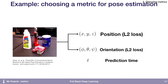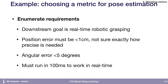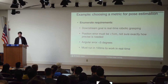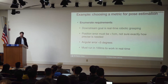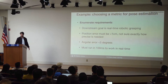To come back to our running example, the way we might choose our metrics is to start by enumerating the requirements. Our downstream goal is real-time grasping. We know we need less than one centimeter of position error, though we're not sure whether it's 0.5 or 0.25 centimeters. Similarly, we know we need less than five degrees of angular error, and inference must run in less than 100 milliseconds to work in real-time. So let's say these are our requirements.